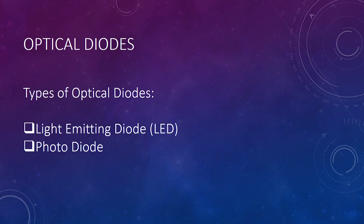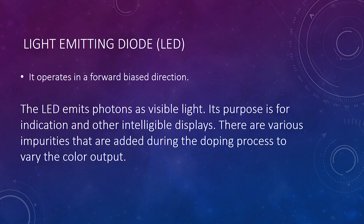Moving on, let's talk about optical diodes. There are two types of optical diodes: the light emitting diode, or LED, and the photodiode. The LED operates in a forward bias direction and emits photons as visible light. Its purpose is for indication and other intelligible displays. There are various impurities added during the doping process to vary the color output.